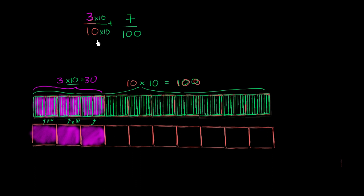So when you do that, we can rewrite this thing as 30 over 100. 3 tenths is equivalent to 30 over 100. We add that to 7 over 100, or another way of thinking about it, 3 tenths is the same thing as 30 hundredths. And we add that to 7 hundredths.